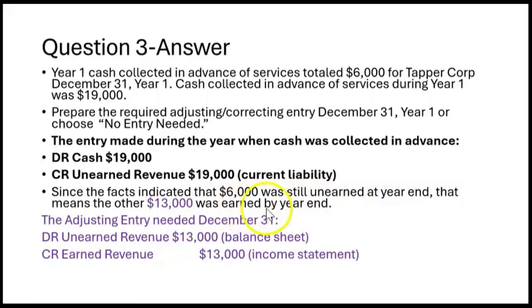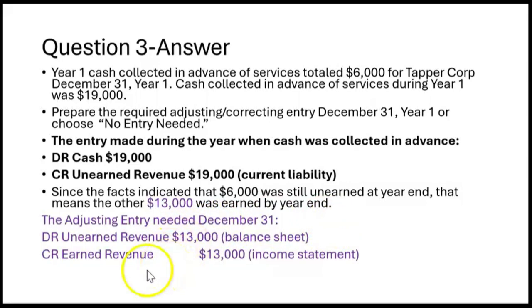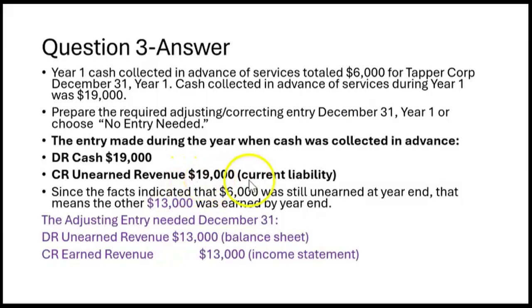So $19,000 was collected before it was earned all year, and $6,000 was still unearned at year end. That means the other $13,000 must have been earned before year end. So the adjusting entry needed December 31st would be to reduce the liability unearned revenue and increase revenue by $13,000. Why $13,000? Because $19,000 was collected in advance and $6,000 was still unearned, so $13,000 of unearned revenue must now be earned as of December 31st, year one.